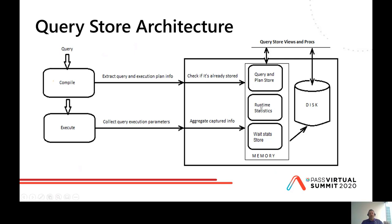When the query goes to the execution engine, Query Store does not store each execution. It rather stores aggregate information representing all executions per defined interval. The default interval is 60 minutes — meaning for each executed plan, Query Store stores one row every 60 minutes. This goes into the runtime store. Up to three rows are possible since the query can be executed successfully, can be aborted, or end up with exceptions. For each plan and interval, Query Store also captures and stores wait info.